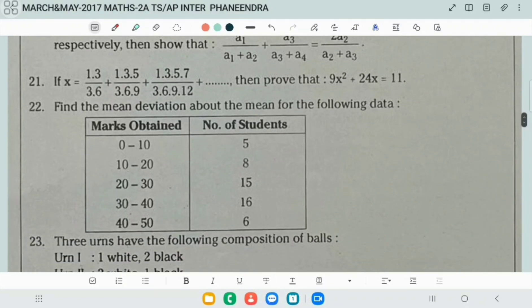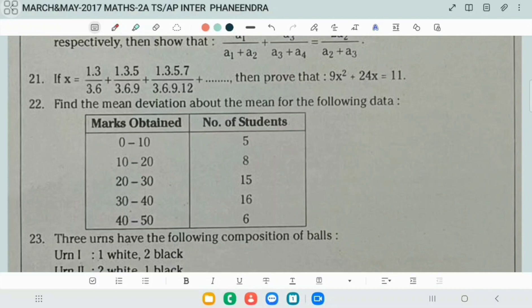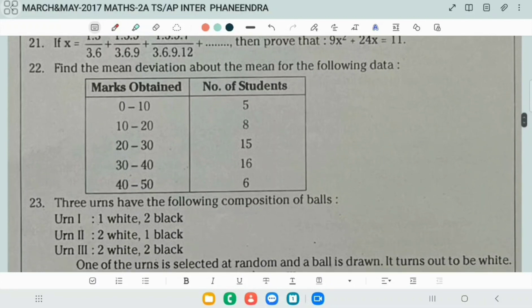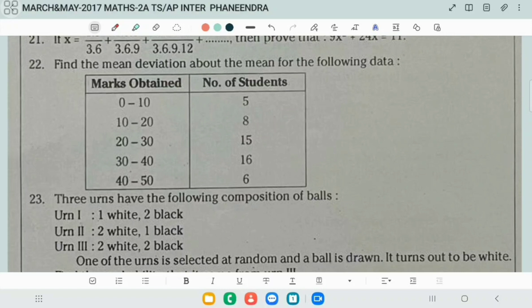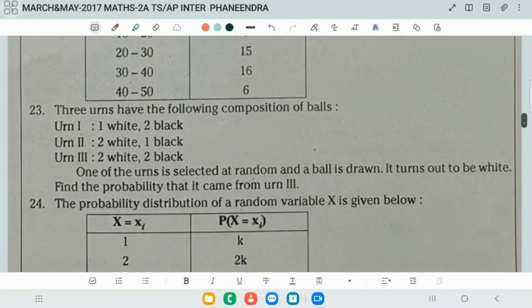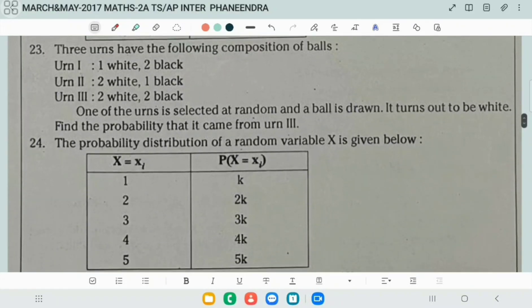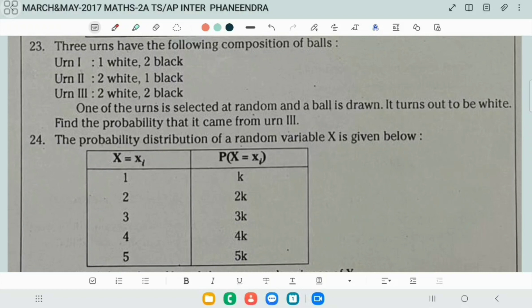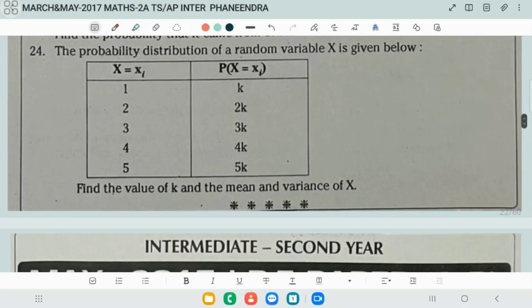And here, this binomial theorem: if x equals 1 into 3 by 3 into 6 plus and so on, then prove that 9x squared plus 24x equals 11. Next, find the mean deviation about the mean for the following data. Three urns have following compositions of balls. This is also related to Bayes' theorem application. The probability distribution of the random variable x is given, so you can find the value of k and mean and variance of the random variable x.